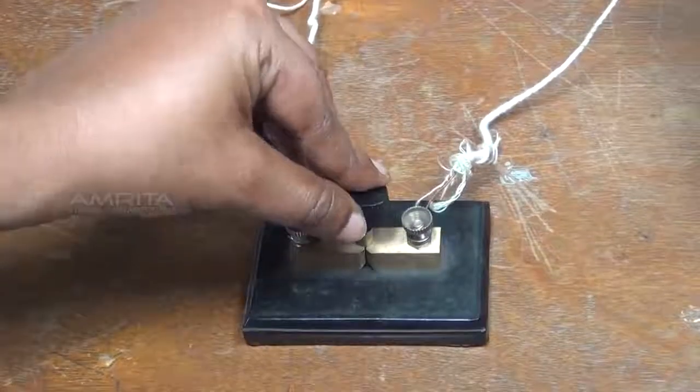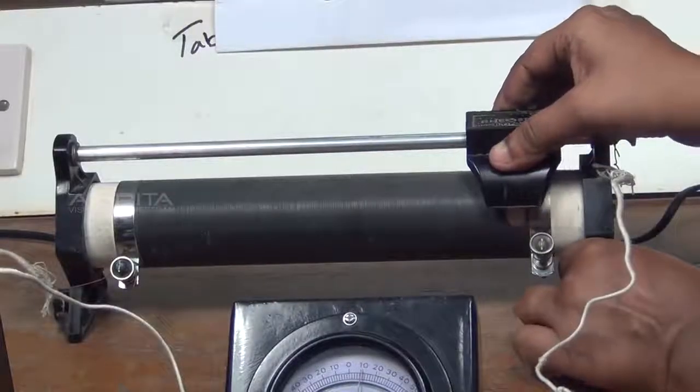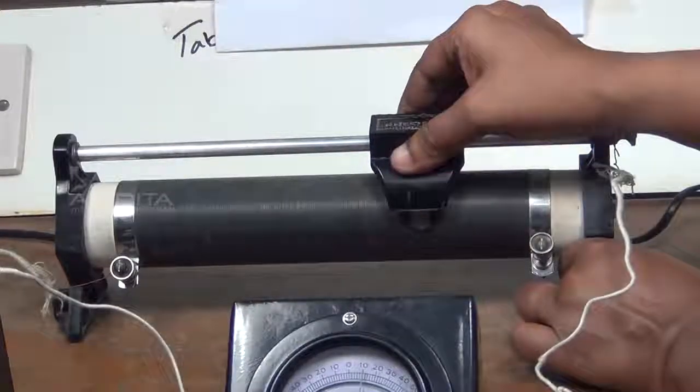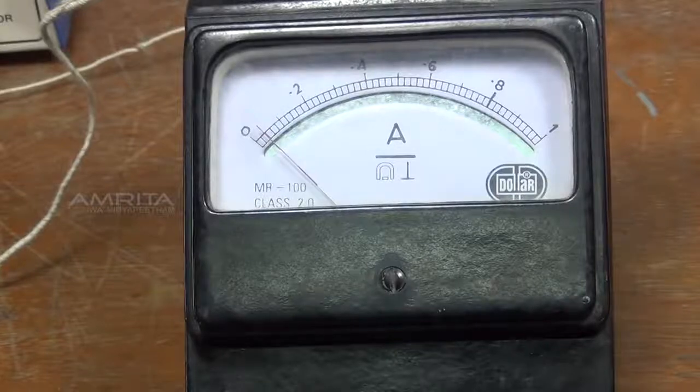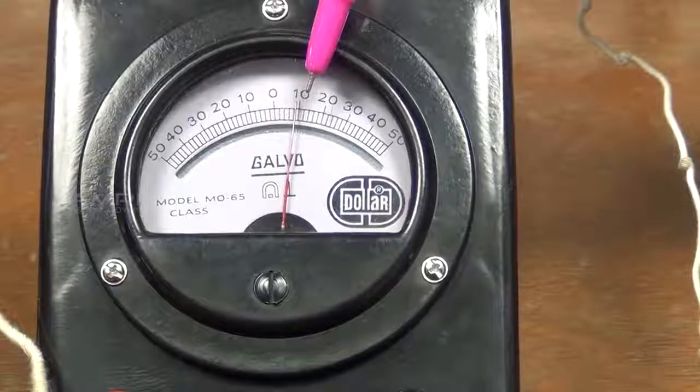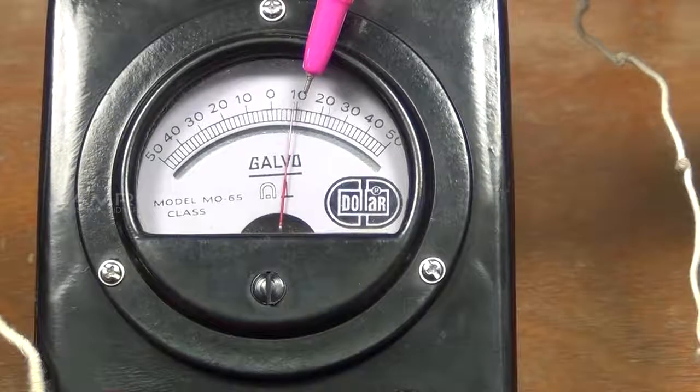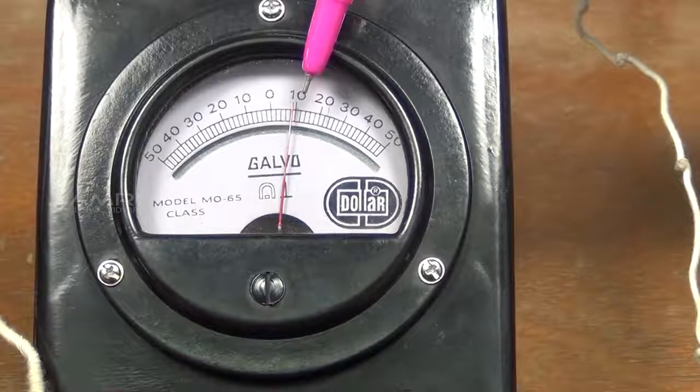Insert the key. Adjust the rheostat and set the current reading of the given ammeter at a particular value. The reading of the galvanometer is noted.